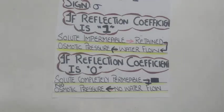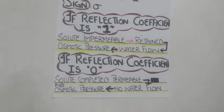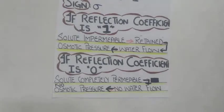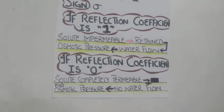If the reflection coefficient of a solute particle is zero, it means it is completely permeable and the solute can easily pass through the cell membrane. As a result, there will be no water flow or osmosis, and therefore no osmotic pressure will be created. For example, the reflection coefficient of urea is zero, which means urea will not cause osmosis and will not exert any osmotic pressure.